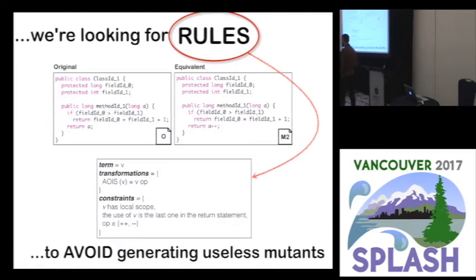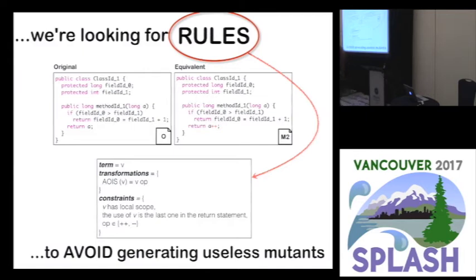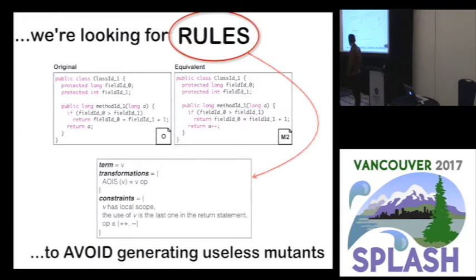What's a rule? We define our rule as a triple: terms, transformations, and constraints. A term is any programming language construct — in this case we are using Java. A transformation is the application of the mutation operator to the term or part of the term. Constraints are the conditions to confirm whether the mutant will be useless. In this case, AOIS is the mutation operator. My term is V. If I apply AOIS to V, I will generate V with operator OP. But if V has a local scope, the use of V is the last one in the return statement, and OP is a post-increment or post-decrement, this mutant will be useless.